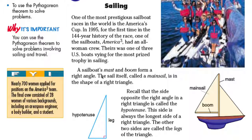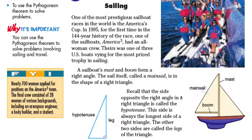Sailboats' mast and boom form a right triangle. This is your mast right here, and this is the boom. So the boom and mast create a right triangle. The sail itself, called the main sail, is the shape of a right triangle.